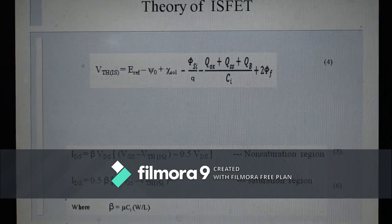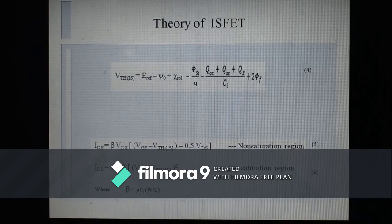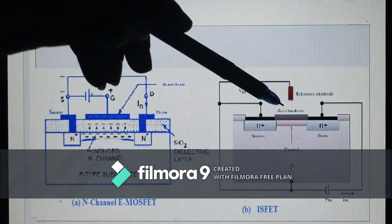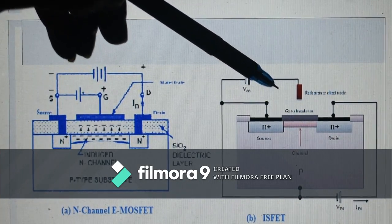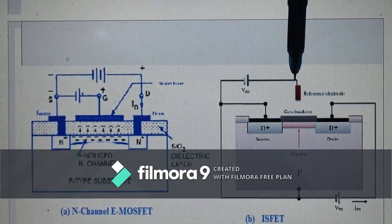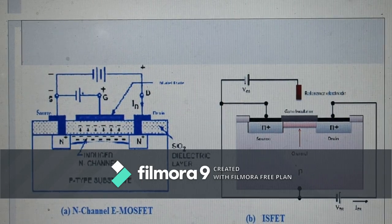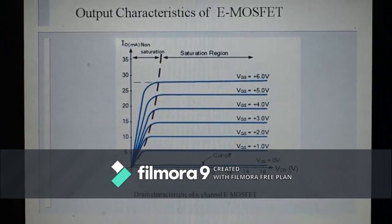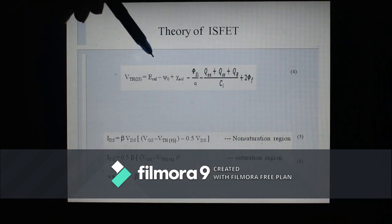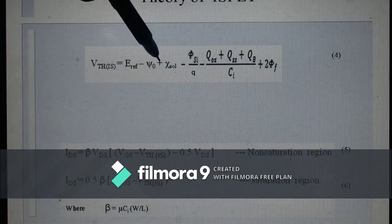One is a constant reference voltage generally denoted by E-reference, because the reference electrode is a non-polarizable electrode. The other is ψ0 plus ψ-solvent.